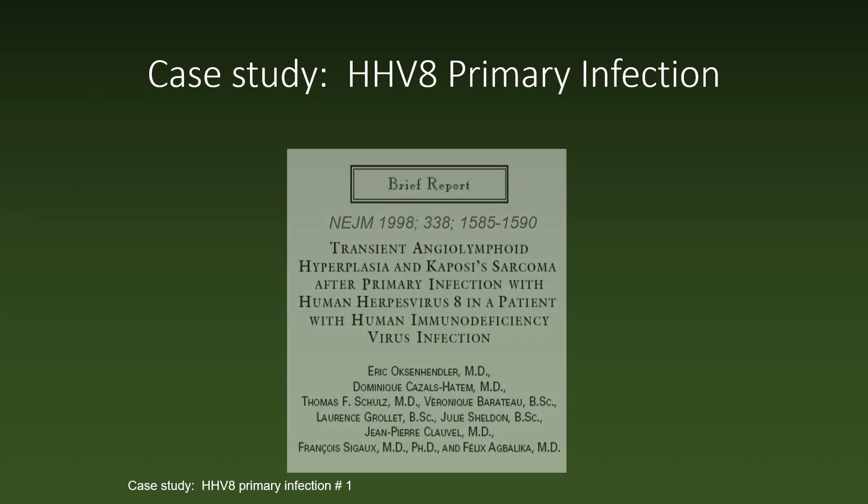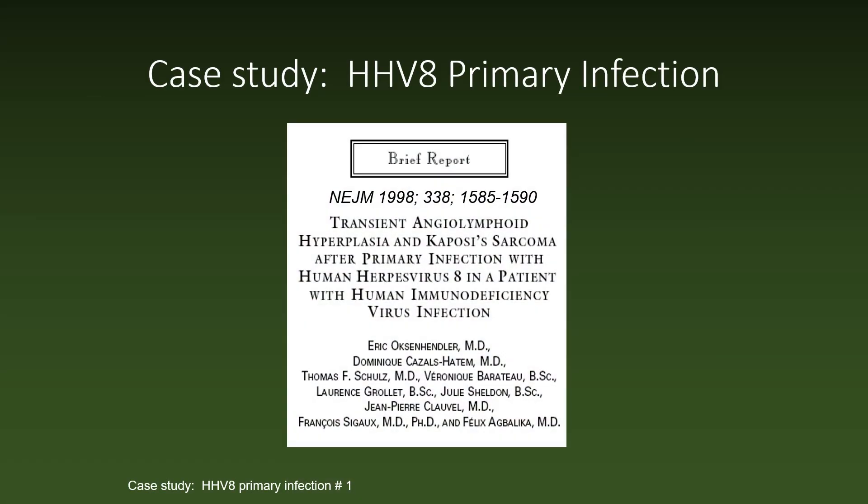In persons living with HIV, HHV-8 primary infection may present as an acute disease with transient lymphoid hyperplasia and Kaposi's sarcoma, as described in this case report from the New England Journal of Medicine in 1998.